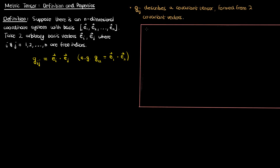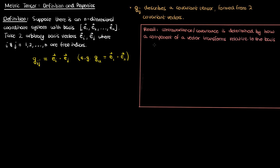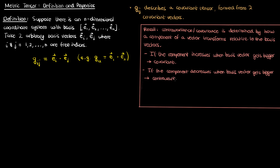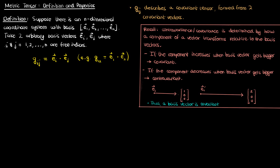Let me explain why these basis vectors are covariant. Recall from a previous video that whether a vector is contravariant or covariant depends on how its components transform relative to the basis vectors. If the component increases when the basis vector is transformed to a bigger basis vector, that is a covariant component. If the component shrinks when the basis vector gets larger, that is a contravariant component. For a quick numerical example: say I have a basis vector e1 given by components (1, 0, 0) in three dimensions. If I double the length of e1 to get e1 prime, then the components of e1 prime also double. In other words, the component of the basis vector co-varies with the basis vector — it is covariant.